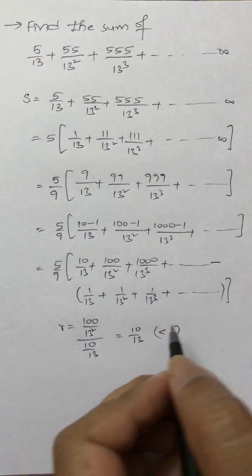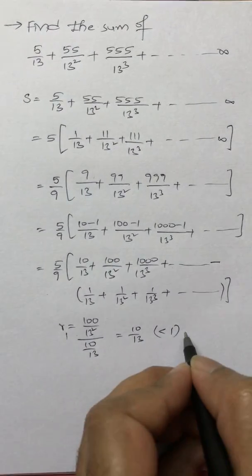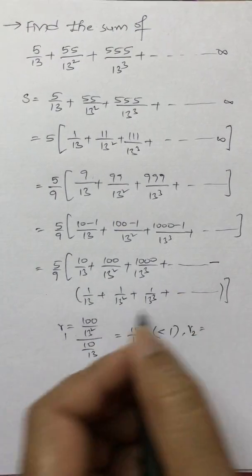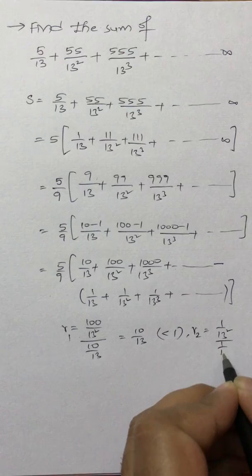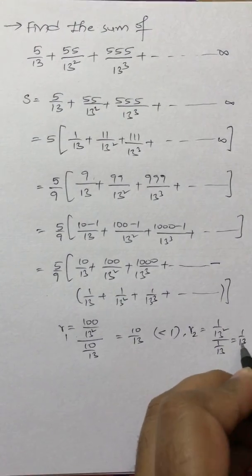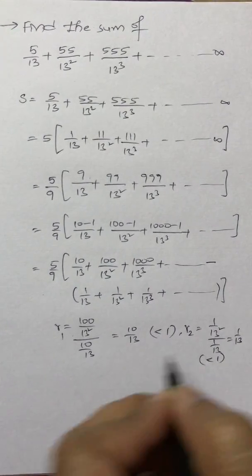Again, if I see the second one also, let's say this is R1, so R2, this is also a GP. 1/13² divided by 1/13, this is 1/13, so this is also less than 1.